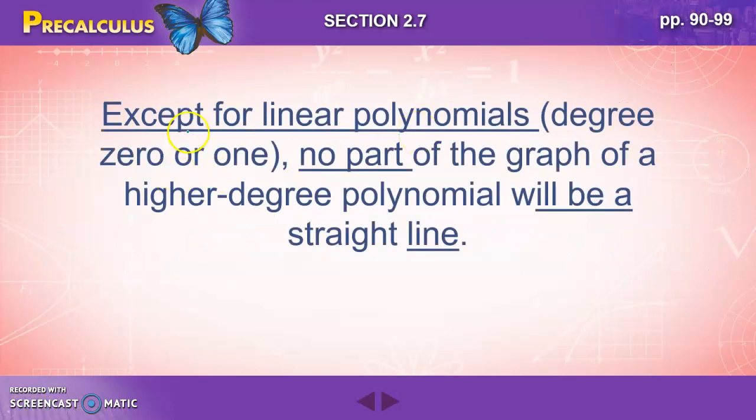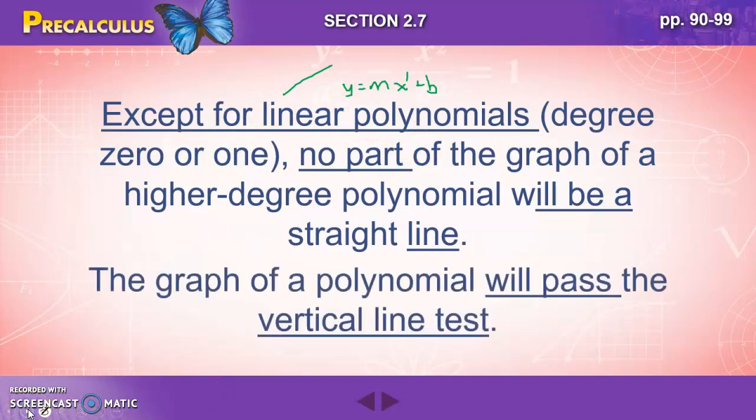Except for linear polynomials, remember linear just means straight line, which have a degree of 0 or 1, no part of the graph of a higher degree polynomial will be a straight line. We know that linear polynomials are straight lines. That's our y equals mx plus b, so we have a degree of 1 there. There it is, and those are straight lines, but higher degree polynomials are not going to have any straight lines.